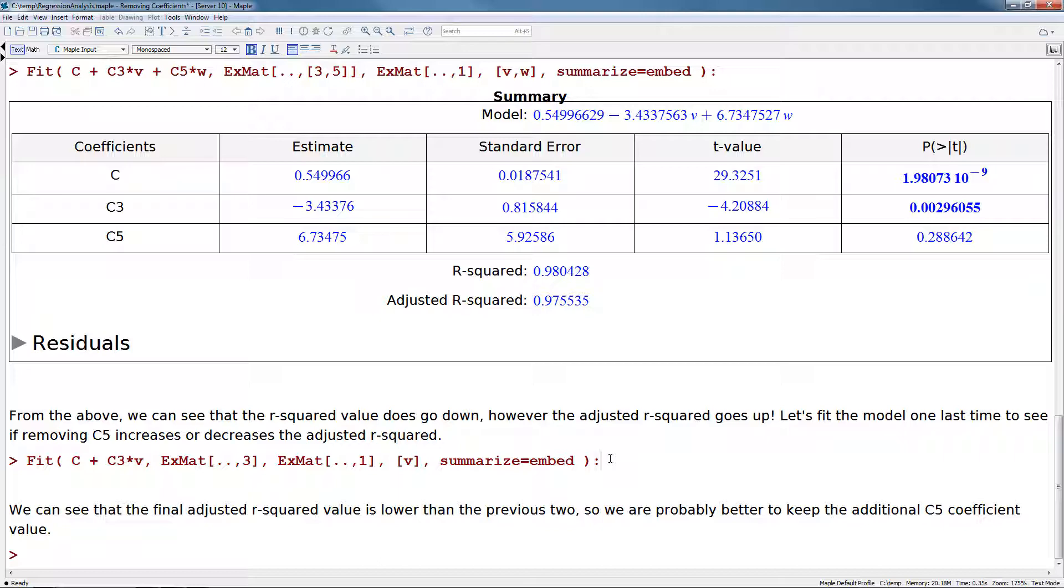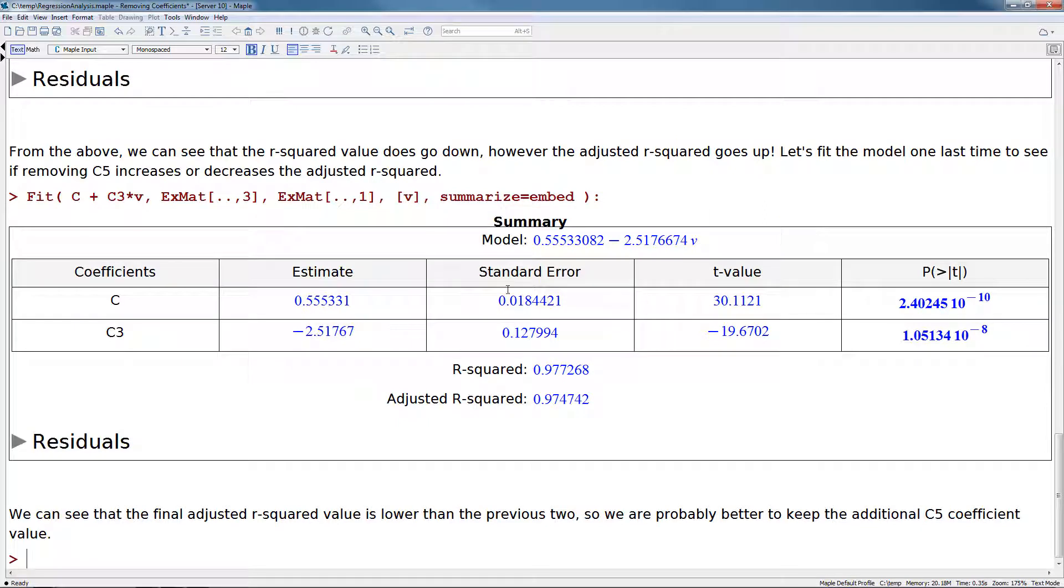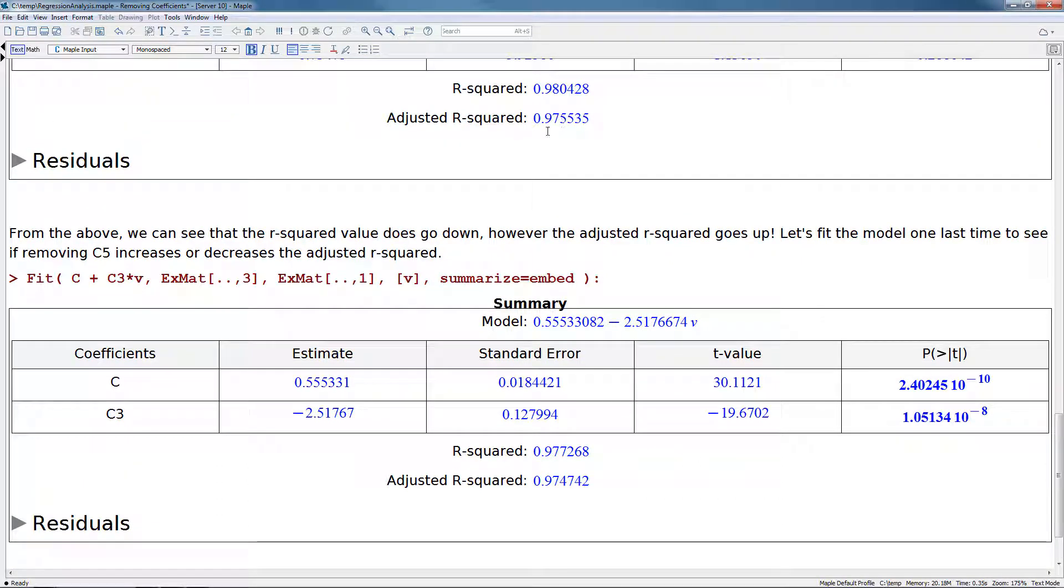So we can actually run another test. We'll just remove the C5 coefficient and see what value we get from that, so we don't have that last coefficient. So now we see adjusted R squared value here of 0.974. So we actually see here that having the C5 predictor in is slightly better than having just the C3 predictor.